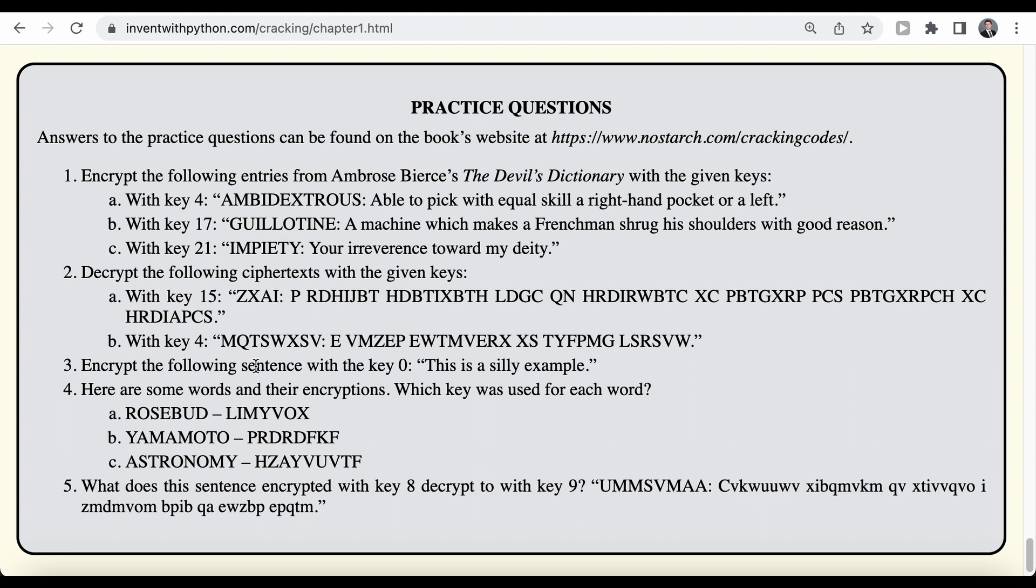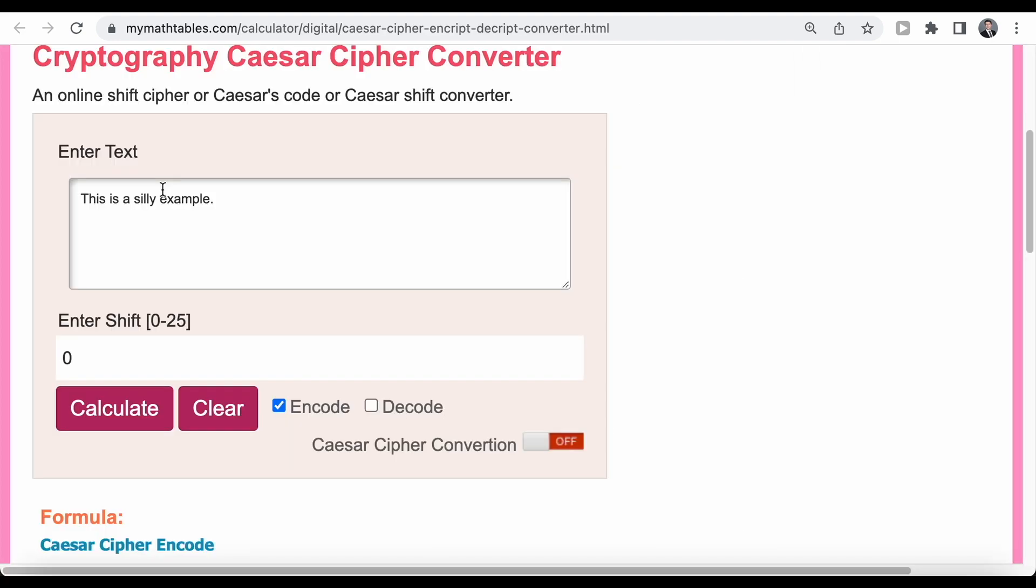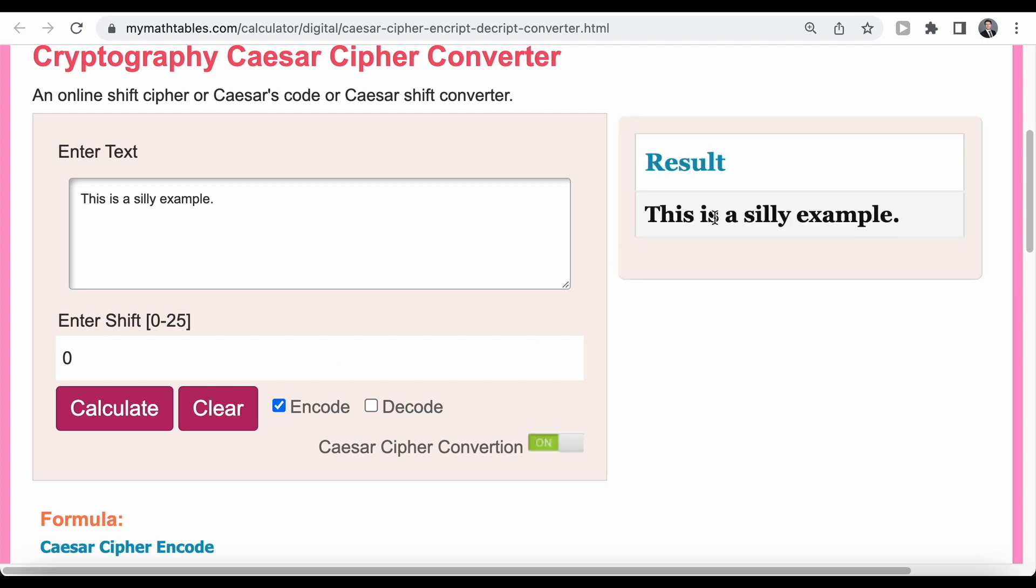The next question asks us to encrypt the following sentence with key zero. And the text is, this is a silly example. Now the sentence already tells us something. Because if we look back at our cipher wheel and we start with the word this, for instance, if we apply a key of zero, then of course, we would start with the letter T and move zero letters forward in the alphabet. So we still have the T. And the same is true with all the other letters. So basically, the sentence will not be encrypted because with a key of zero, we don't shift the actual numbers. And we can also see that in our converter. So if we enter the text here, we select a key of zero, and we select encode and click on calculate, we get back the exact same sentence.